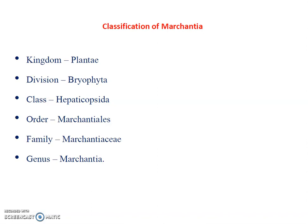Marchantia is in the kingdom Plantae, division Bryophyta. Kingdom Plantae is divided into five divisions: Algae, Bryophyta, Pteridophyta, Gymnosperm, and Angiosperm. In the division Bryophyta, genus Marchantia occurs under class Hepaticopsida. Bryophyta is divided into three classes: Hepaticopsida, Bryopsida, and Anthocerotopsida. Marchantia occurs in Hepaticopsida, order Marchantiales, family Marchantiaceae, genus Marchantia.